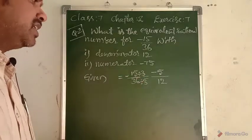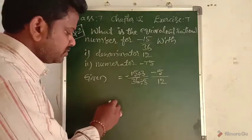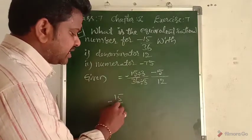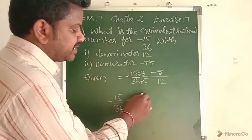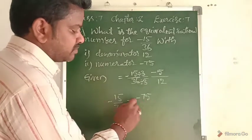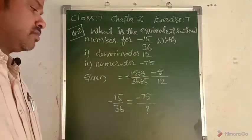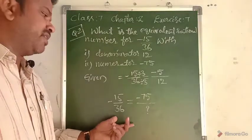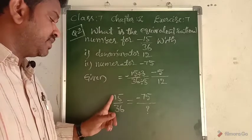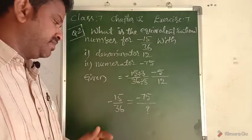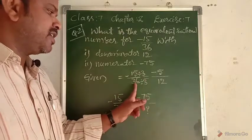The equivalent rational number for minus 15 by 36 is minus 5 by 12. For the second condition, we need to find the equivalent of minus 15 by 36 where the numerator is minus 75. So what will be the denominator when minus 75 is the numerator?